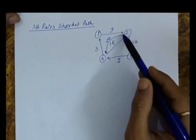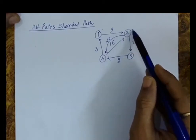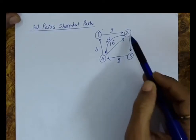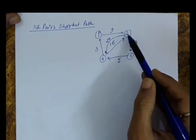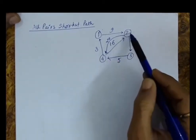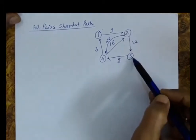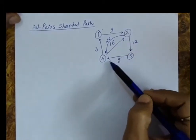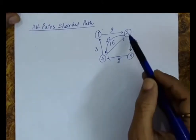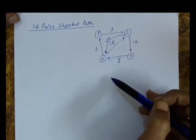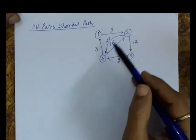Similarly, some paths may be shorter by taking vertex 2 as a mediator. For example, if I want to go from 2 to 4, the direct distance between 2 to 4 is 20. But if I follow the path 2 to 3 and then 3 to 4, the distance becomes 12 plus 5, which is 17. So I will follow this path. We will take every vertex as a mediator at one point of time and then update the distances.